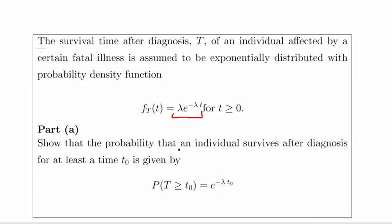This should be familiar to you at this stage if you're familiar with the exponential distribution. As a quick remark, we're going to be using exponential numbers a lot in this, so have all of the rules and types of calculations you might need for exponential numbers ready in your mind. The question asks us to show that the probability that an individual survives after diagnosis for at least a time t₀ is given by P(T ≥ t₀) = e^(−λt₀).